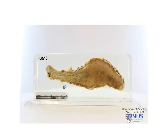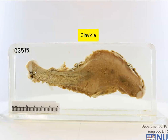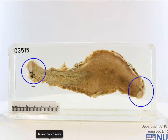Hello, this is the pathology specimen of a clavicle. We can see that at both ends there is a whitish area, and these areas represent the epiphysis, where this is the epiphyseal growth plate.